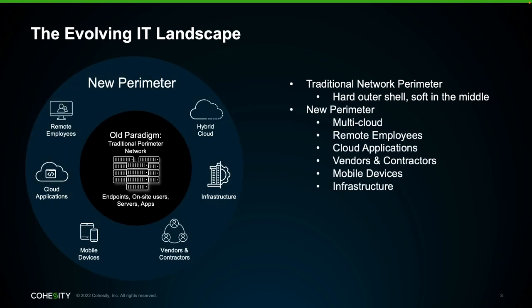Now let's talk about the new IT perimeter. Think about where your data, applications, and users reside today. The pandemic forced users to work from home, and many, if not most, have not come back to the office. Data is now being accessed via SaaS-based web applications, and these applications have access to much sensitive data. Vendors and contractors can also require connectivity, further exposing organizations to potential data threats. Many organizations have also adopted a hybrid or multi-cloud deployment model that has data residing in the cloud.